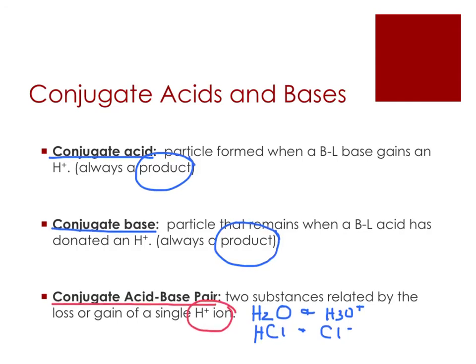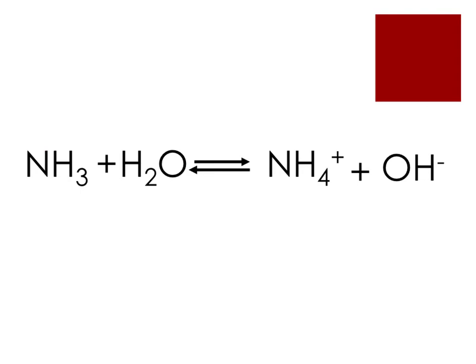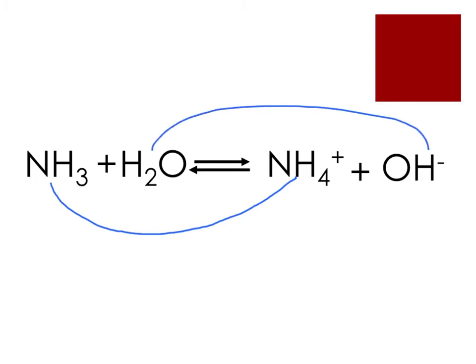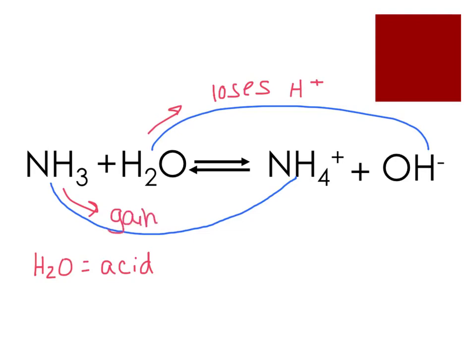Let's take a look at the conjugate acid-base system formed by ammonia, the example we started this video with. We start by connecting our conjugate acid-base pairs — substances that differ by one H+. Therefore, NH3 and NH4+ is a conjugate acid-base pair, as is H2O and OH-. As H2O becomes OH-, it loses an H+, making H2O our Brønsted-Lowry acid. Likewise, as NH3 becomes NH4+, it gains an H+, making it our Brønsted-Lowry base.